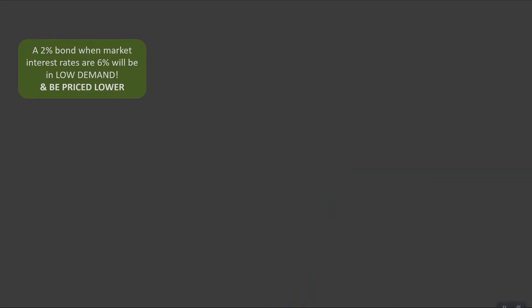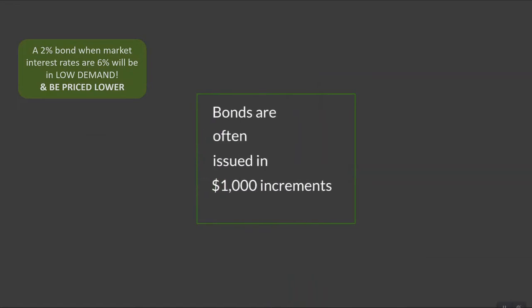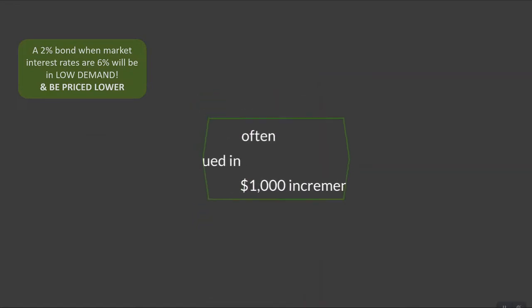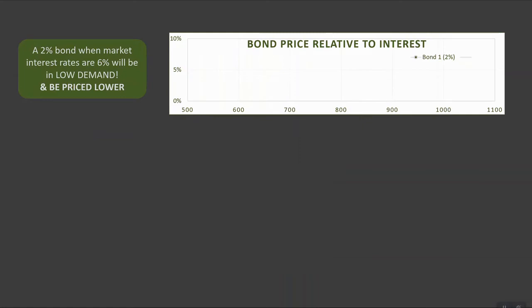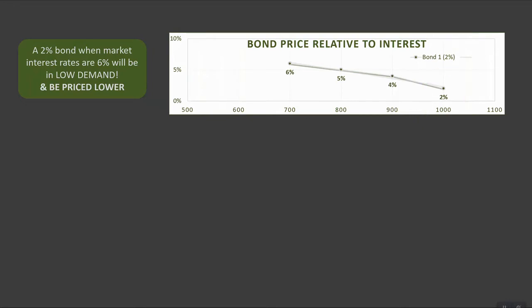When a company chooses to issue bonds to raise funds, they usually do so in thousand dollar increments. For example, if we have a two percent bond when market interest rates are six percent, that bond will be in low demand and priced lower. As interest rates are closer to the bond's stated rate of two percent, that's when the bond would be valued closer to a thousand. So as interest rates go up, this bond would be cheaper — in this instance, for example, $700.